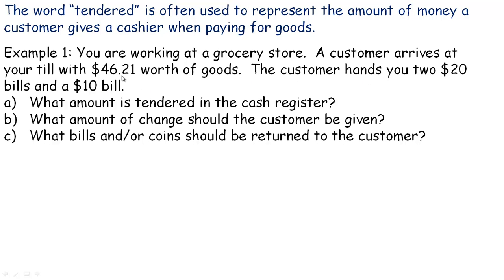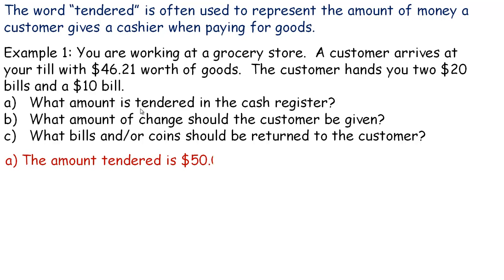In the first example, you're working at a grocery store. A customer arrives at your till with $46.21 worth of goods. The cash register tells you that total is $46.21. The customer hands you two twenty dollar bills and a ten dollar bill. Two twenties would only be $40, so that's why they've also given you the ten dollar bill. Part A asks: what amount is tendered? The amount tendered would be $50.